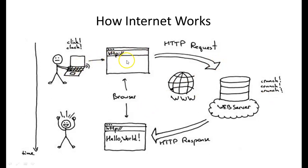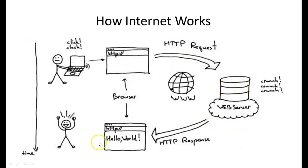When you click something on your screen, an HTTP request goes to the web server. From the web server, it can be accessed by other people. So if you have created a page on HTTP and launched it on a web server, it can be accessed by others using the www website. This is where you develop it and the end users access it.